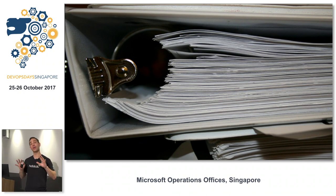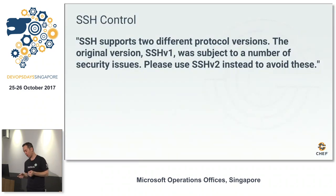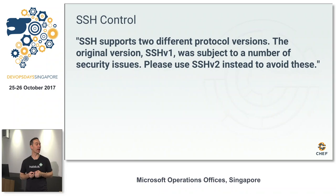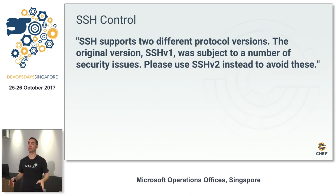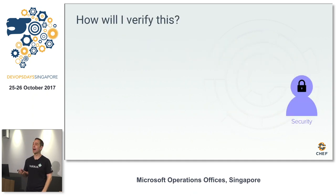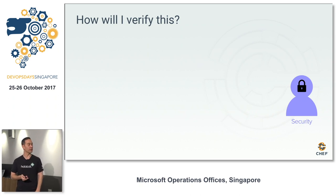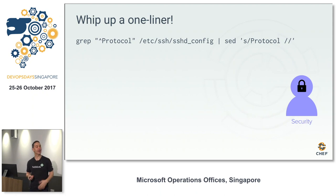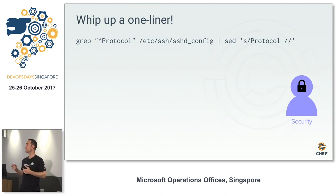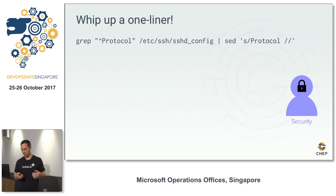You are not going to release features. You're going to stop what you're doing and make sure things are set up right. You open it up and the first thing you see is an SSH control. You start to read and it says SSH supports two different protocol versions. SSH v1 was broken a long time ago, it's not maintained, you should not be using it — please use SSH v2. You know a little bit of bash, a little bit of Perl, so you're going to whip up a one-liner using grep and sed to check which version of the protocol you're running.